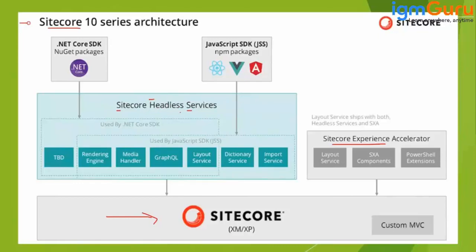From Sitecore 10, it is called Sitecore Headless Services because they have started to support .NET Core as well. So now you have two options: if you want to create a headless application, you can either use the JSS JavaScript SDK through Angular, Vue, React, or Next.js, or if you are not comfortable with JavaScript, you can write your code in C# using .NET Core. That's why instead of calling it just JSS, they now call it Sitecore Headless Services.